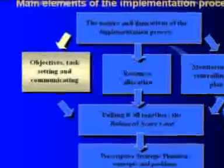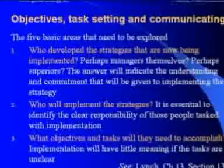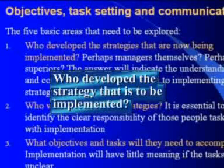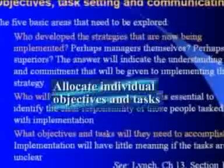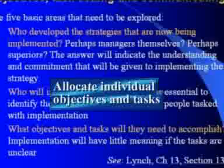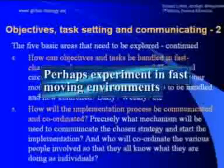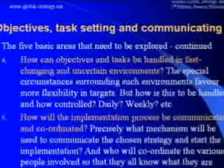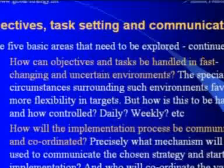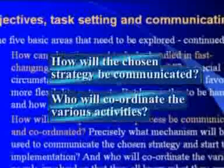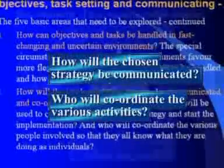With regard to objectives, task setting, and communicating the strategy, it is useful to establish first who developed the strategy that is to be implemented, as this will influence the implementation process. Individual objectives and tasks will then follow from the agreed objectives. It may be necessary to experiment to find the optimal combination of events, and in fast-changing environments, rigid objectives may be made redundant by outside events. Communication and coordination are vital to satisfactory implementation, and are especially important to ensure understanding of the plan and its underlying assumptions.